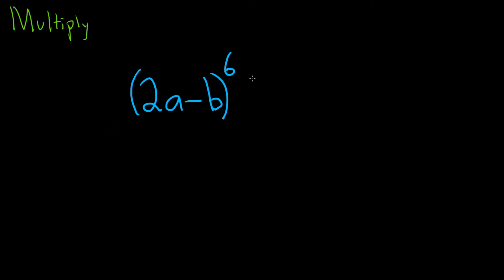In this problem, we have to multiply this out, 2a minus b to the sixth power.